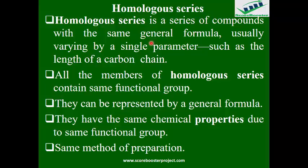Each homologous series has its own general formula — alkanes have theirs, alkenes have theirs, alkynes, alkanoic acids, and so on. All members of a homologous series contain the same functional group: if a double bond is there, it's there for every member; if a triple bond, for all; if an OH group, for all. They can all be represented by a general formula. Knowing the formula of a homologous series allows you to name any member.